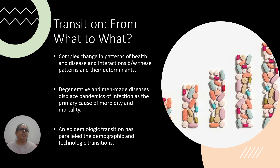This epidemiological transition in the pattern of diseases and their determinants paralleled with the demographic transition. Demographic transition was also happening at the same time, where first we saw high fertility and high mortality, preceded by high fertility and low mortality, then demographic dividend, and finally low fertility and low mortality — resulting in an inverted pyramid. This epidemiological transition paralleled with both the demographic transition and the technological transition.